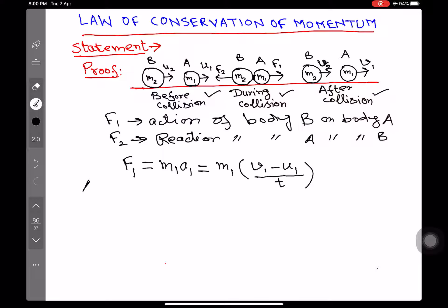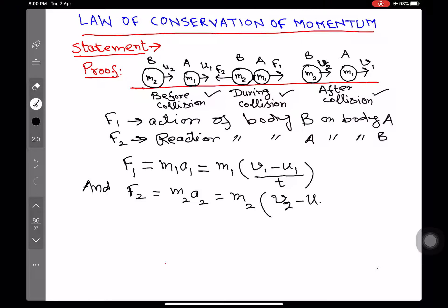And F2 equals M2 into A2, which equals M2 into the acceleration of body B, that is the change in velocity of body B: (V2 minus U2) over time T. Let us call the F1 expression equation number 1, and the F2 expression equation number 2.